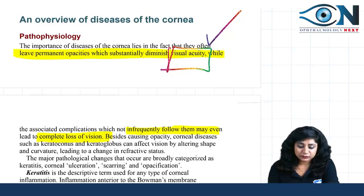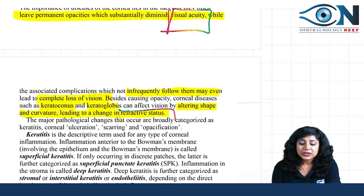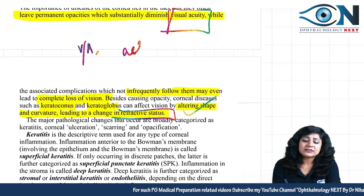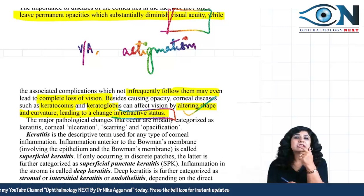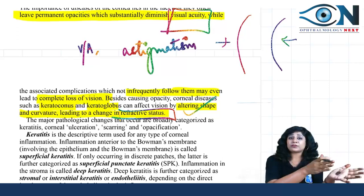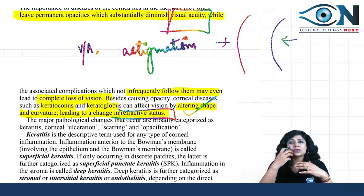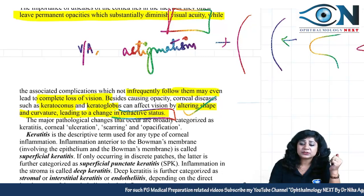Besides causing opacity, there are certain diseases like keratoconus and keratoglobus which also affect vision by altering the shape and curvature, leading to changes in refractive status and causing problems of astigmatism. When you have keratoconus or keratoglobus, the cornea becomes globular or conical in shape, and that change in curvature causes astigmatism.